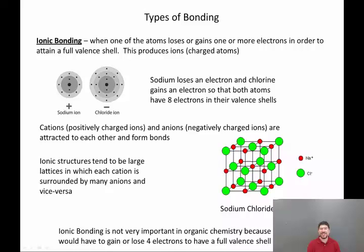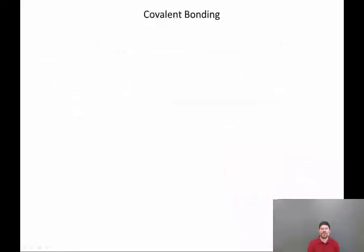However, ionic bonding is not something we're going to talk about very much more in this course. It's not very important in organic chemistry because for carbon to participate in ionic bonding it would have to gain or lose four electrons to have a valence shell. Things that have to gain or lose one electron, that's easy. But gaining or losing four electrons is going to be energetically unfavorable. So if carbon does not participate in ionic bonding, then what does it participate in? The answer is the other major kind of bonding, which is called covalent bonding.